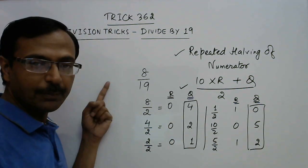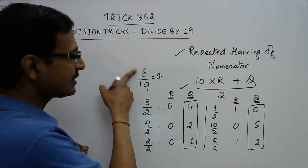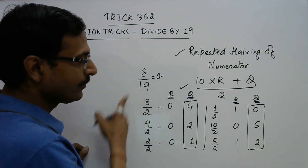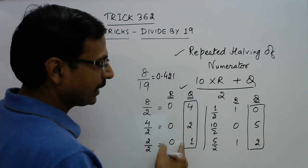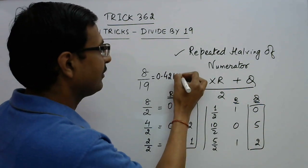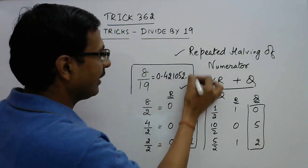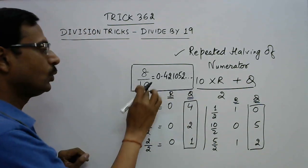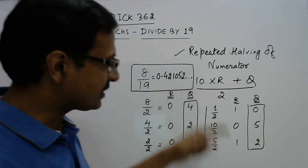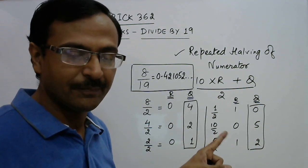So 8 upon 19 will be 0 point, obviously 8 is less than 19, so 0 point, and now keep on writing these digits: 4, 2, 1, 0, 5, 2. And now you can go on and on and find the value of 8 upon 19 to any number of decimal places by repeating this procedure over and over again.